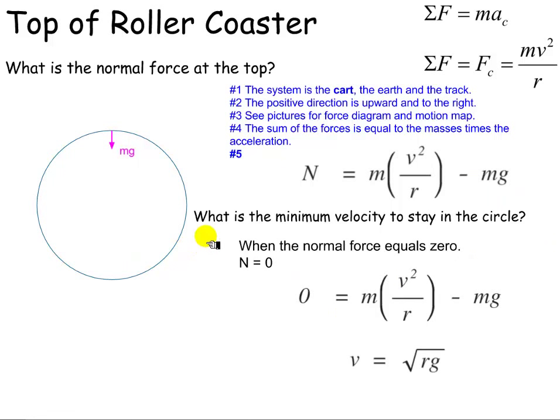One of the things you might be asked to find is, what is the minimum velocity to stay in a circle? So if we were going around in this circle, at some point, if we went too slowly, it would no longer be uniform circular motion. That'd be kind of scary on a roller coaster.